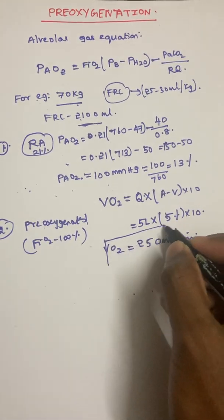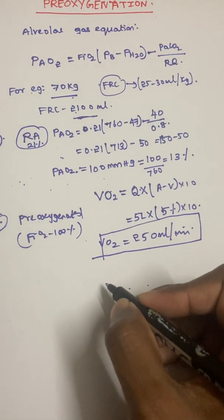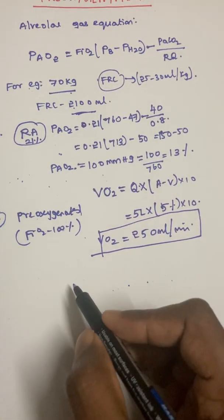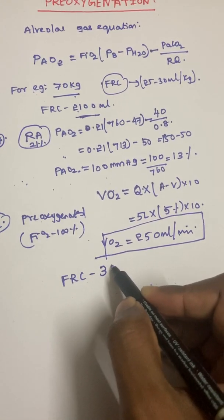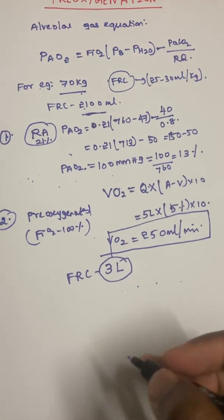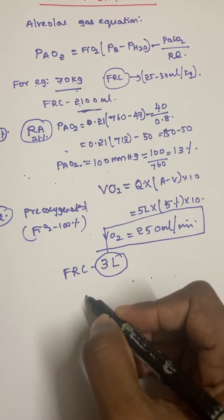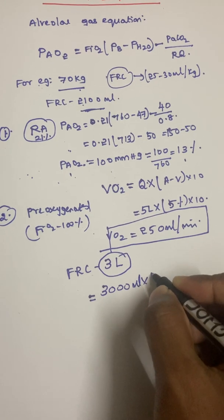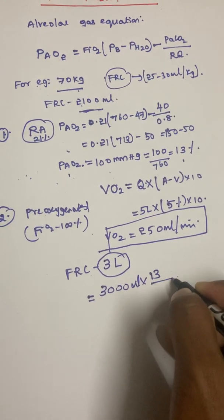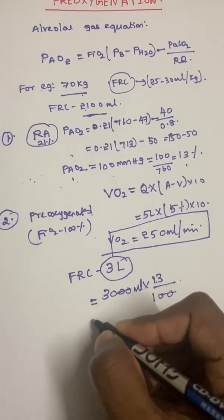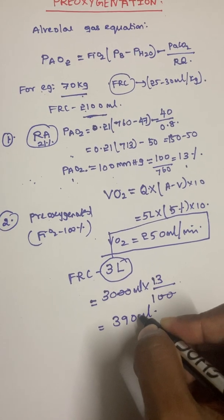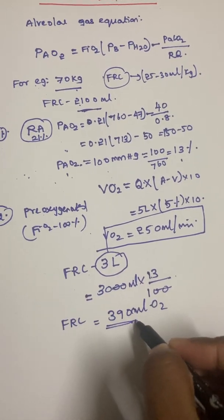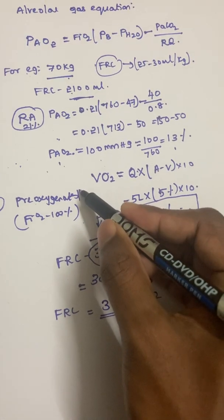With FRC approximated as 3 liters (3000 ml) and alveolar O2 at 13% on room air, the oxygen content in the FRC is 3000 × 13/100 = 390 ml of oxygen in the FRC.